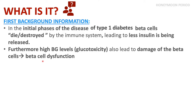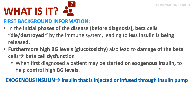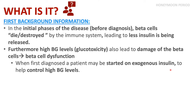When a person is first diagnosed with type 1 diabetes, they will be started on exogenous insulin. Exogenous refers to insulin that is injected. This includes basal insulin and bolus insulin, and this is to help control the high blood glucose levels.